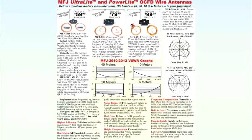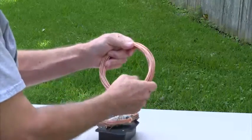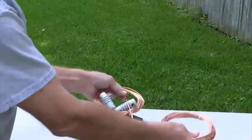MFJ's virtually invisible 66-foot ultralight handles 300 watts PEP, single sideband and CW, on 40, 20, 10, and 6 meters. Weighing less than 2 pounds, it's perfect for low-profile portable and QRP operation.